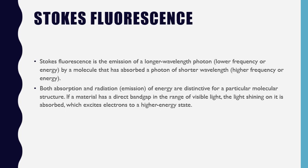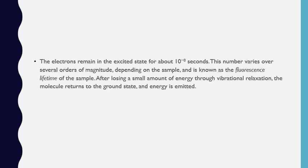If a material has a direct band gap in the visible light region, the light shining on it is absorbed and excites electrons to a higher energy state, and finally it can give fluorescence. Whenever we give energy to move electrons to the higher energy state, the electrons remain in the excited state for approximately 10⁻⁸ seconds — this is the relaxation time for the excited state.